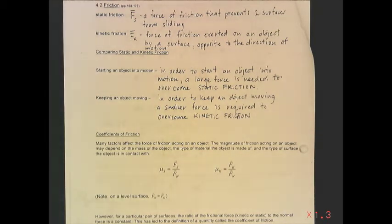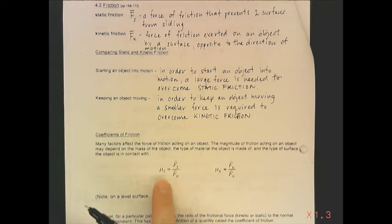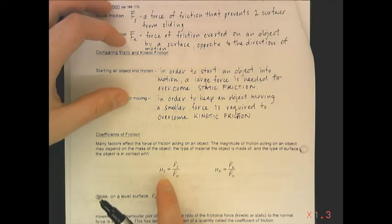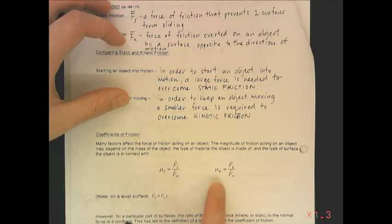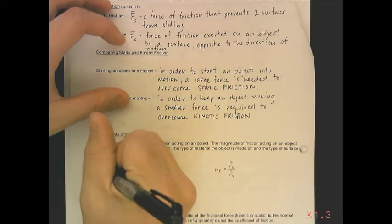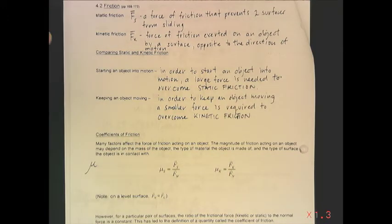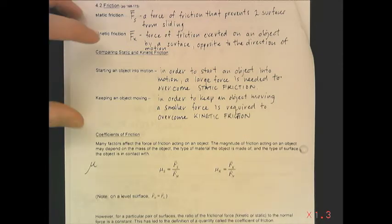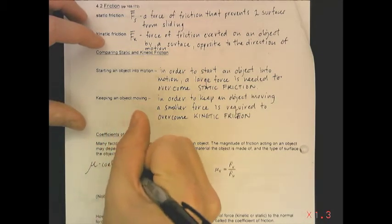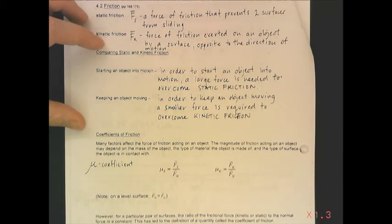There are two equations to calculate static friction and kinetic friction. If you look at them, they are almost the same except for their subscripts — subscript S for static friction and subscript K for kinetic friction. The symbol you see here is the Greek letter mu, and we use this symbol to represent the coefficient of friction, which depends on the surfaces.